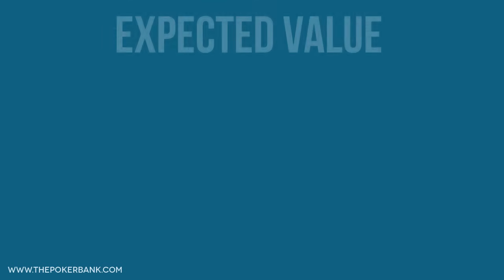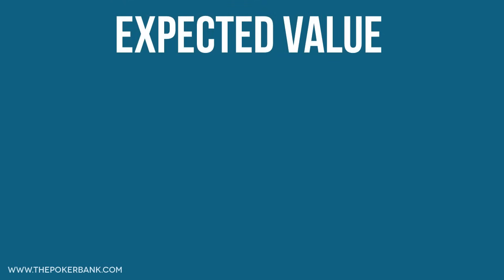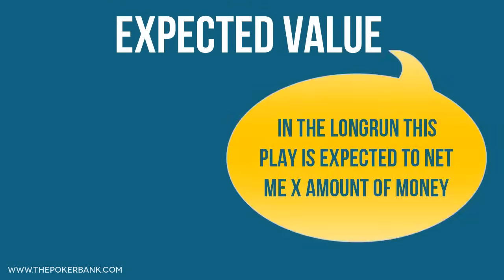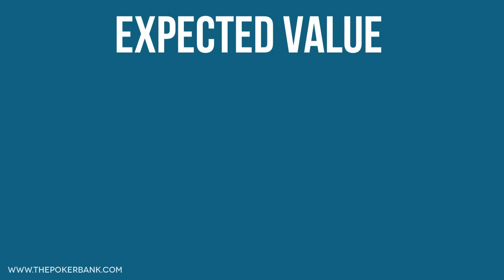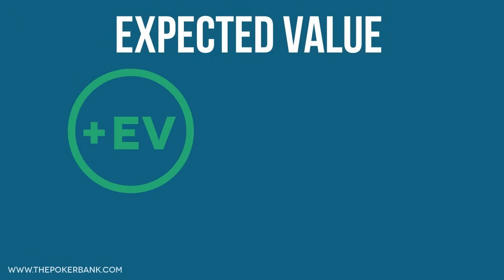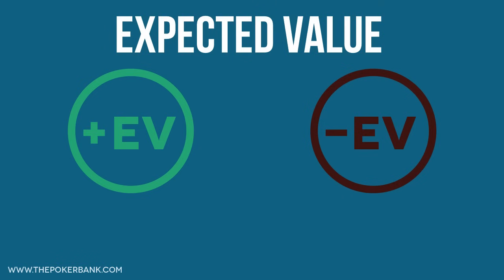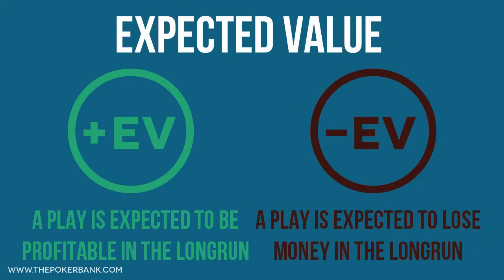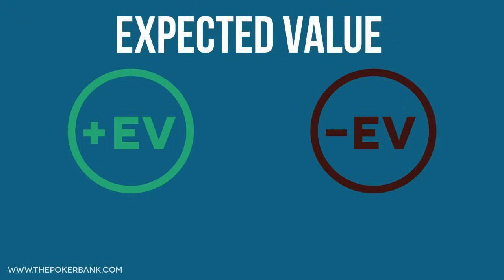EV stands for expected value. It's the mathematical way of saying, in the long run, this play is expected to net me X amount of money. You may have heard the terms plus EV or negative EV before — these simply mean that a play is expected to be profitable in the long run, or that a play is expected to lose us money in the long run. Our goal in poker is to consistently make plus EV plays.